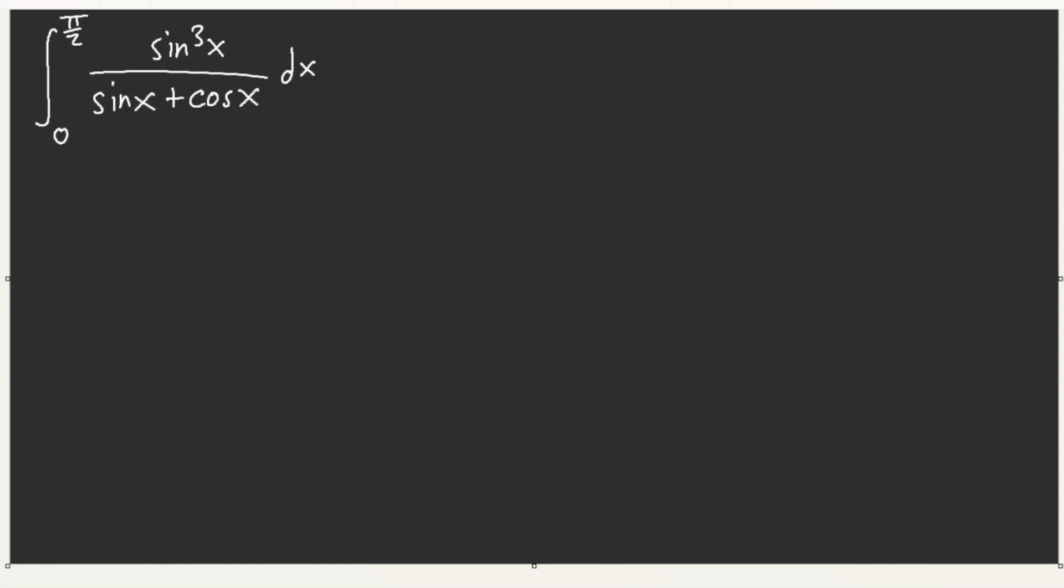We have sine cube over sine of x plus cosine of x. It's not like the usual where we could just do u equals pi over 2 minus x and pi over 4 is our answer. This is something else. So let's see, let me go ahead and abbreviate this for now.